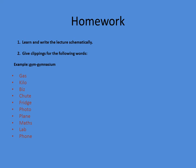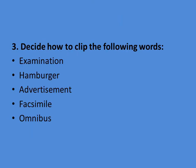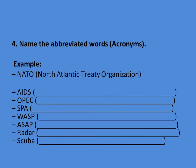Your homework for the next lesson: first, learn and write out the lecture, underlining important terminologies. Second, give clippings for the following words — for example, gym from gymnasium, gas from gasoline, kilo, and so on. Third, decide how to clip the following words — for example, examination becomes exam. Finally, name the abbreviated words and acronyms — you can find information using available resources. Thank you for your attention. We hope this lecture is useful for you in completing your homework.